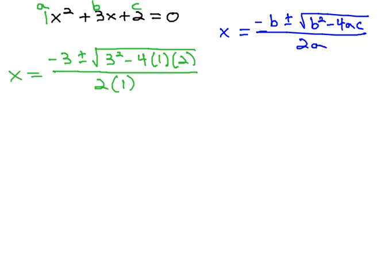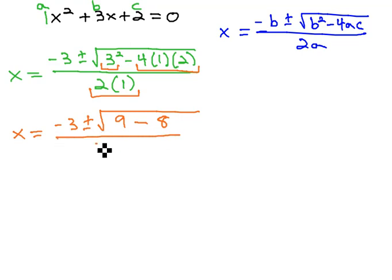What I always simplify first is any exponents and multiplication. This gives us x is equal to negative 3, plus or minus the square root of 3 squared, which is 9, minus 4 times 1, times 2, which is 8, all over 2 times 1, which is 2.